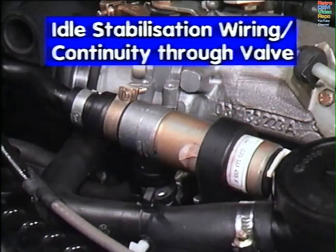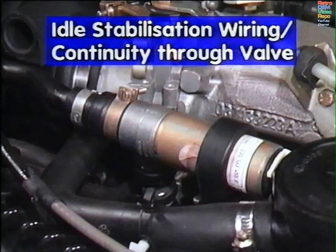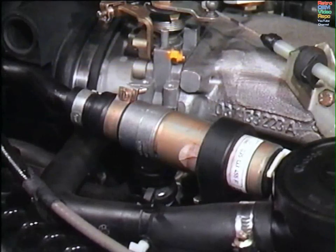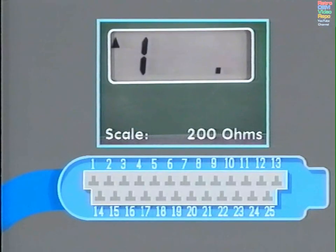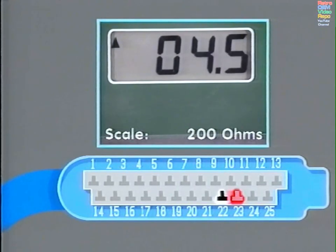Idle stabilization wiring and continuity through the valve. This test checks the continuity of the wires, the plug connections, and the winding in the valve itself in one go. Change the meter to 200 ohm scale. Place the red positive wire in pin 23 and the black negative wire to pin 22. And if everything is in order, a figure to show continuity should appear on the scale. This one is 4.4 ohms, but systems do vary. If no reading is obtained, check at the component to narrow the cause of the problem.